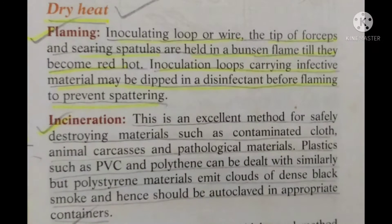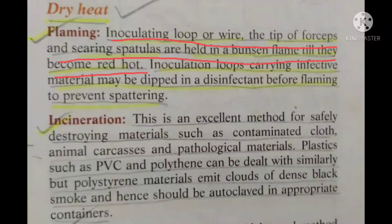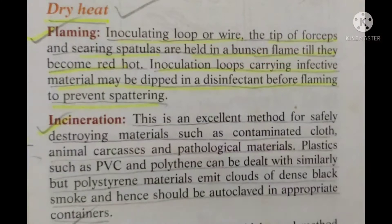The first dry heat sterilization method is flaming. Flaming is commonly used for sterilization of inoculating loops, wire tips, forceps, spatulas, etc. We use a Bunsen burner flame and hold the material in the flame until it becomes red hot. The second dry heat sterilization method is incineration.